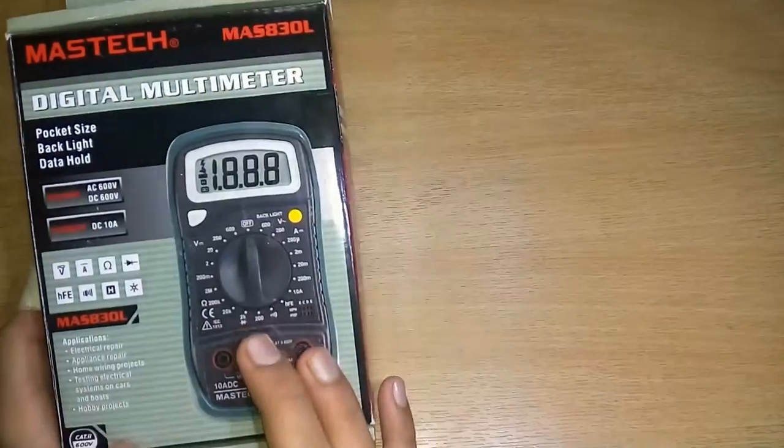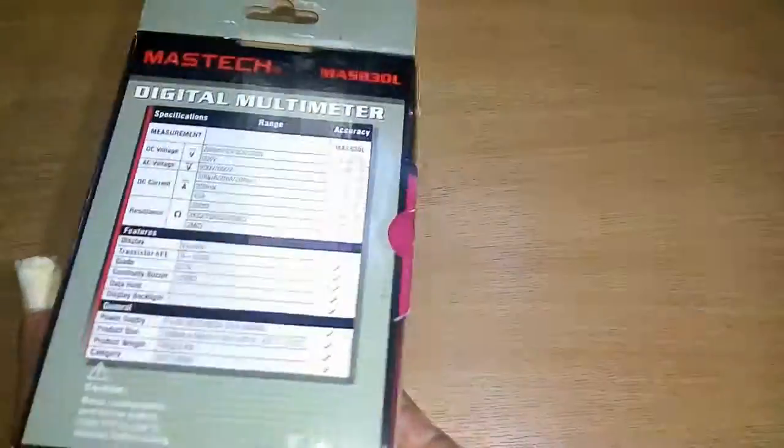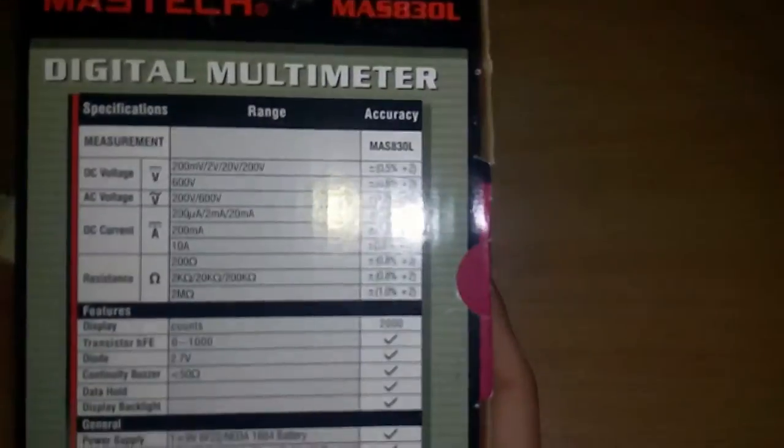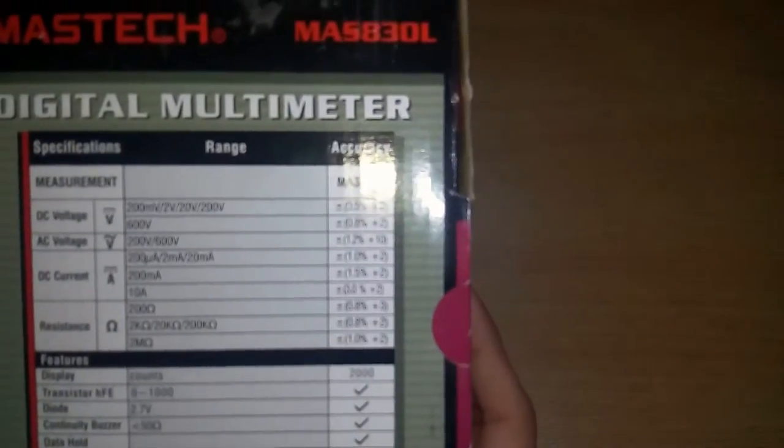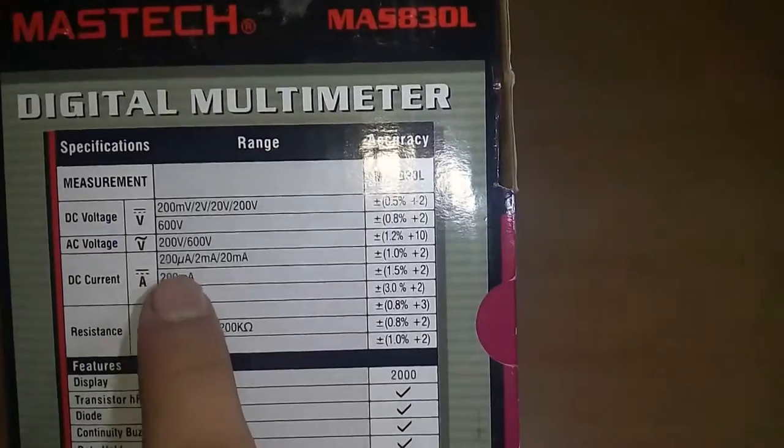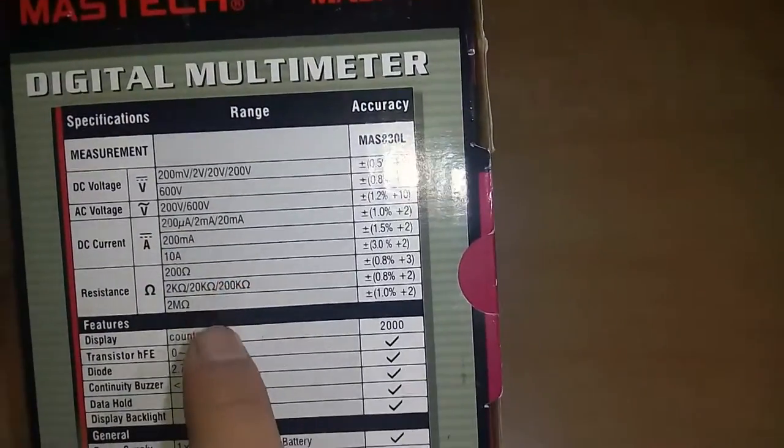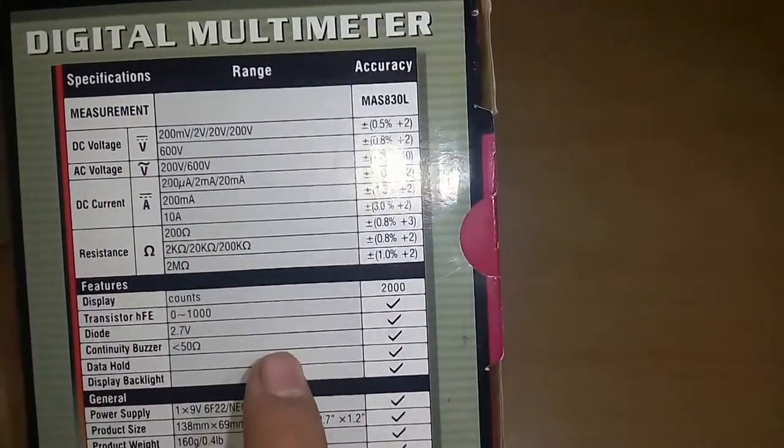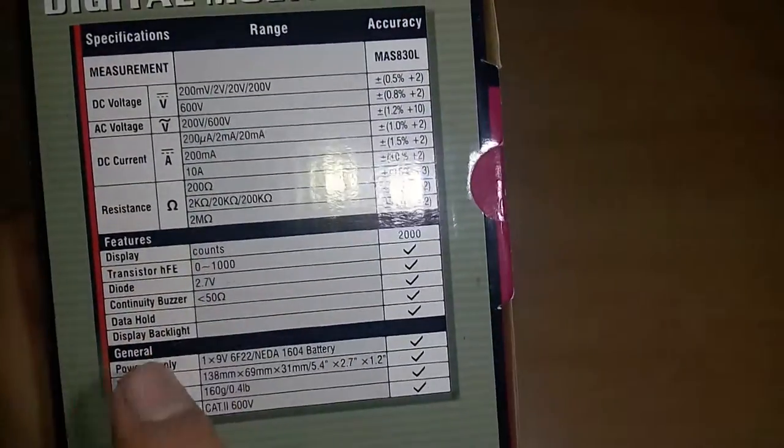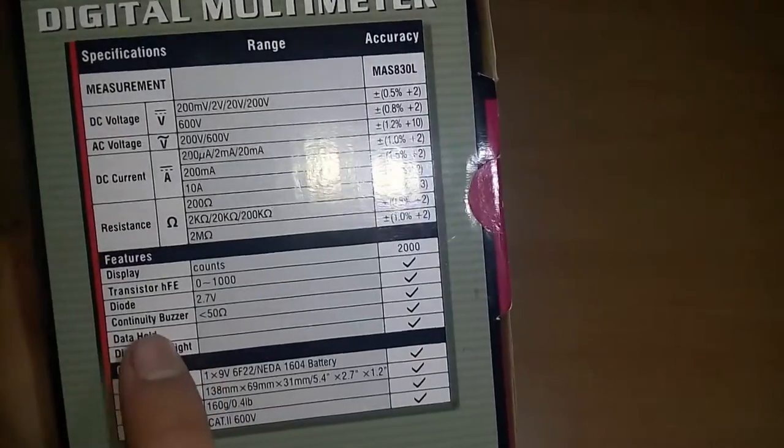There are some features on the front page. At the back we have a detailed spec chart—that's the DC voltage it can measure, the AC voltage, DC current, the resistance, some accuracy percentages, the features, the backlight option, and...